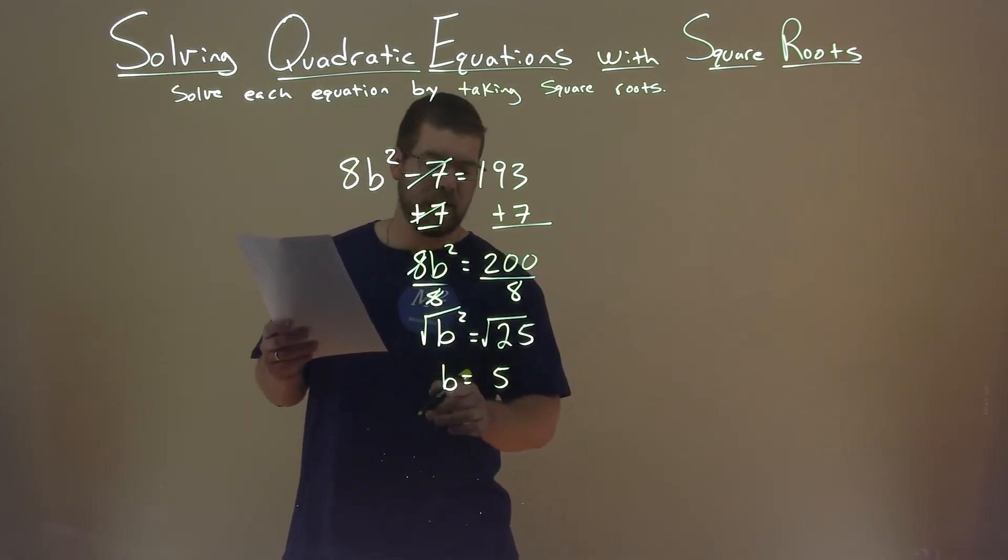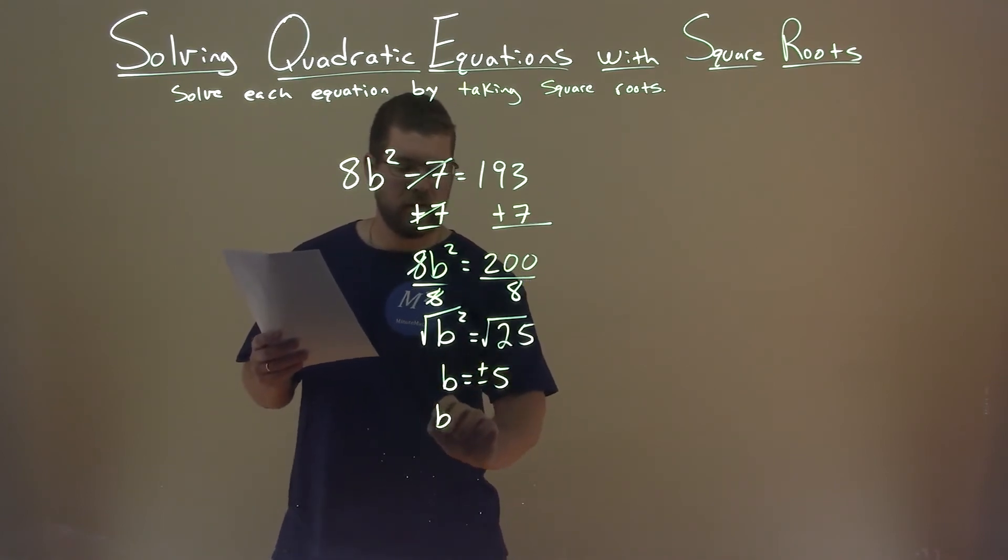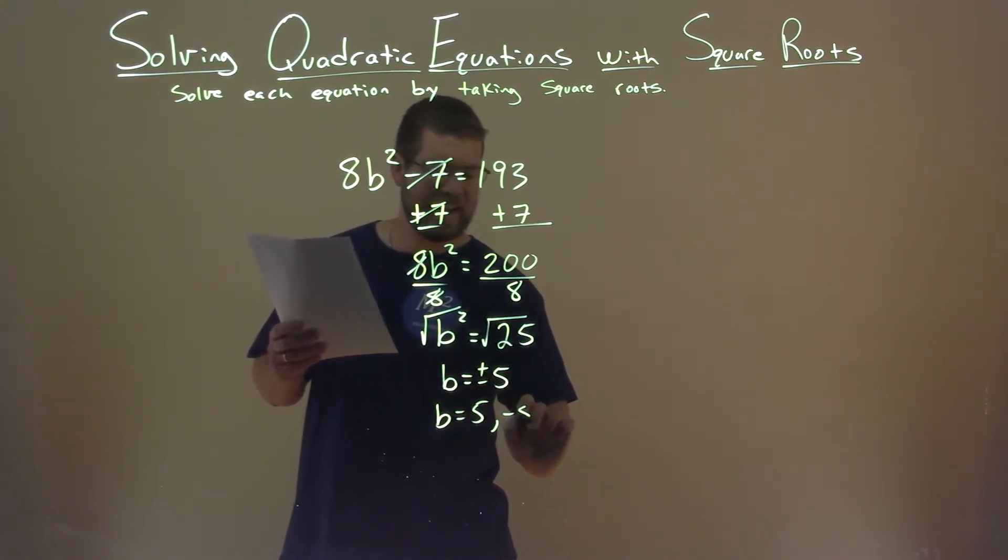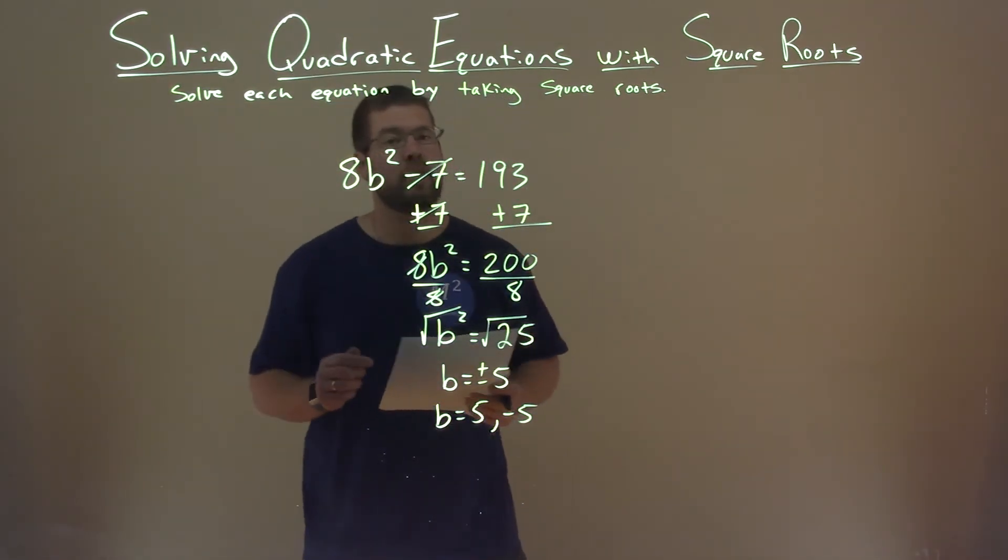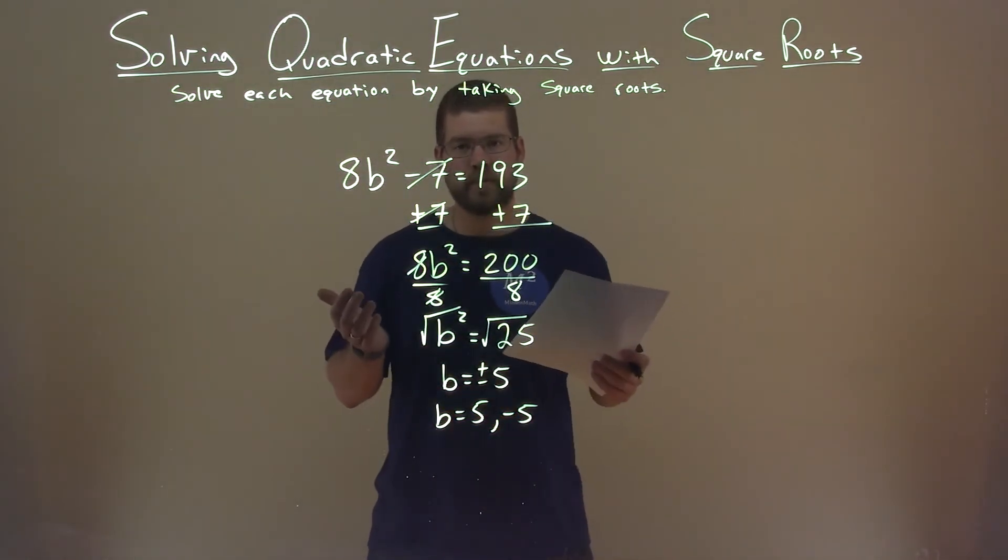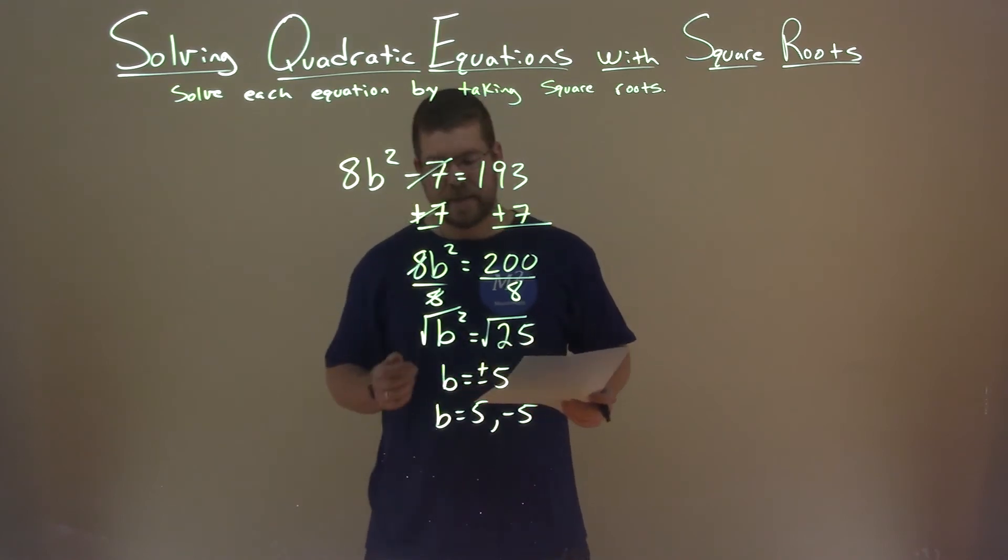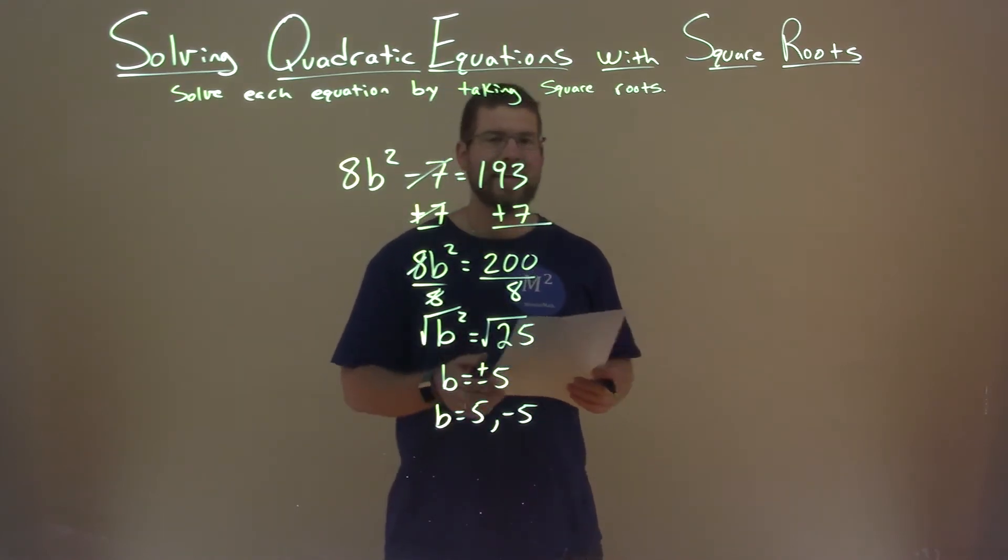But, square root over the equal side, we do plus and minus. So b equals a positive 5 and a negative 5. Both of those two values, when plugged into our original equation, make it true. So the final answer is b equals positive 5 and negative 5.